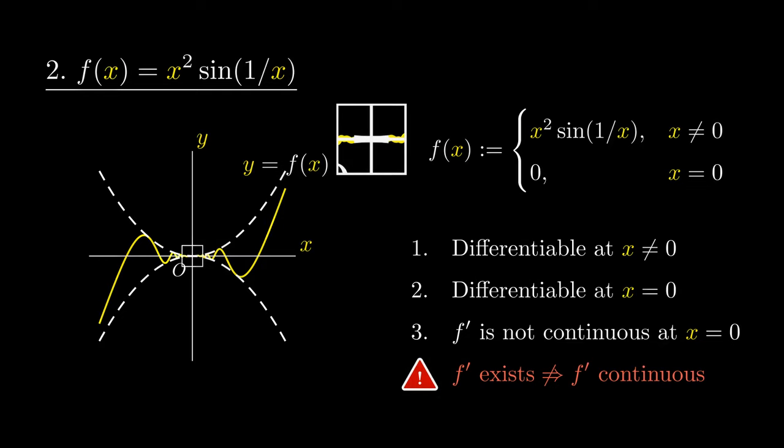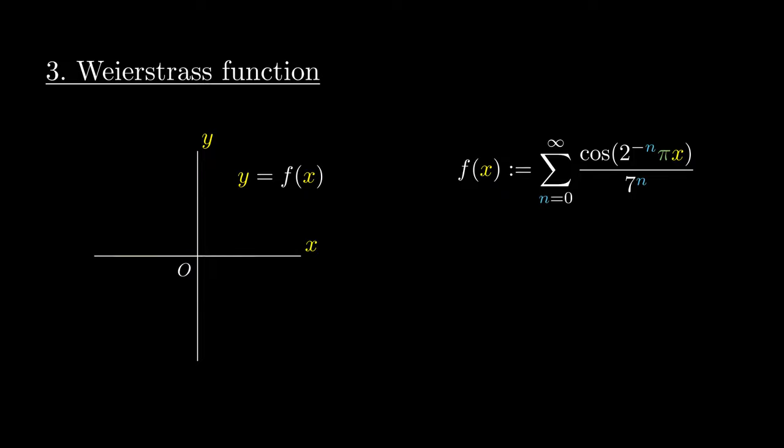This leads us to an even crazier function known as the Weierstrass function. The function, though complicated, simply refers to a cosine wave getting more cosine-y or more jagged.